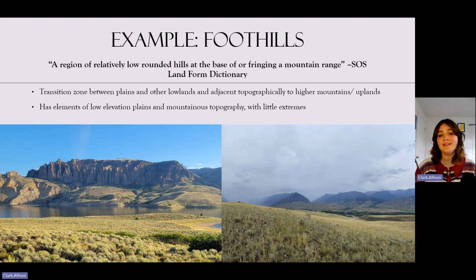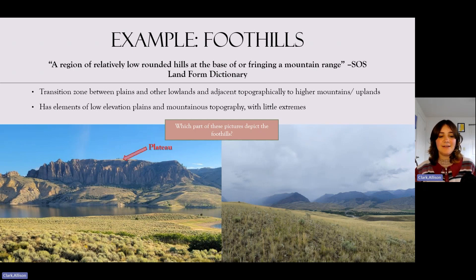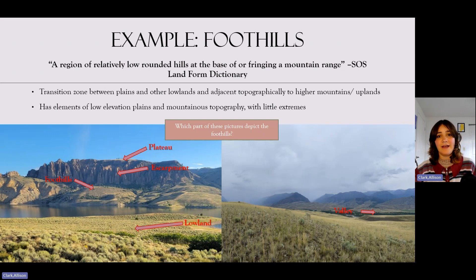Foothills have elements of both low elevation plains and mountainous topography but with little extremes on either end. Let's practice identifying landforms in pictures. In the image on the left, the flat top is the plateau, the rocky steep cliffs below it are an escarpment, the foreground near the water is a lowland or floodplain, and in between those high and low points is where the foothills are. In the image on the right, the valley at the bottom sits between two hillsides, the steep peaks in the far background are highlands, and in between them are the foothills.